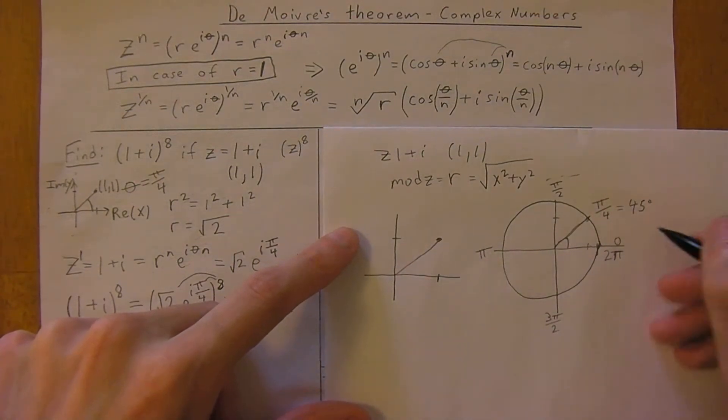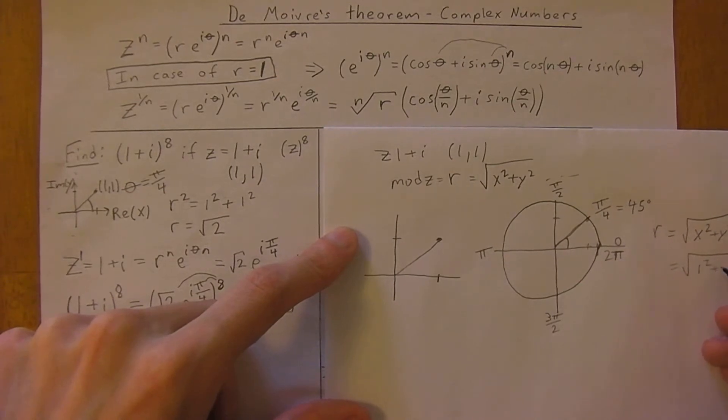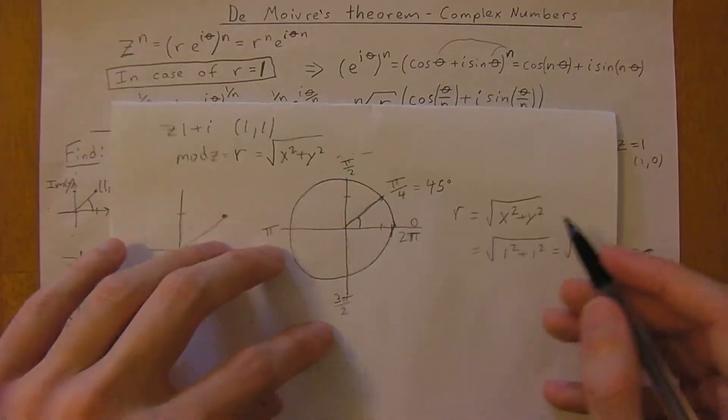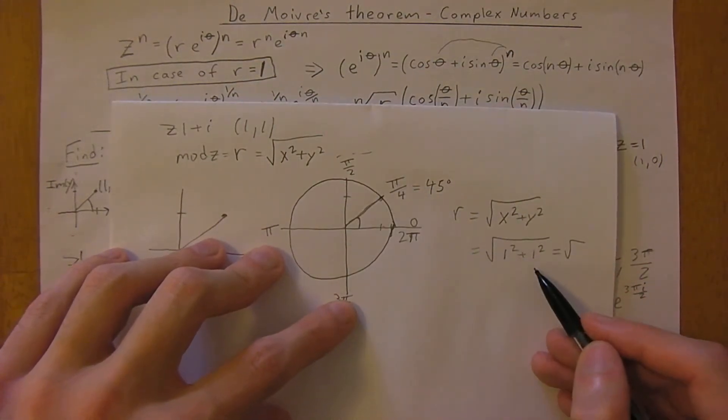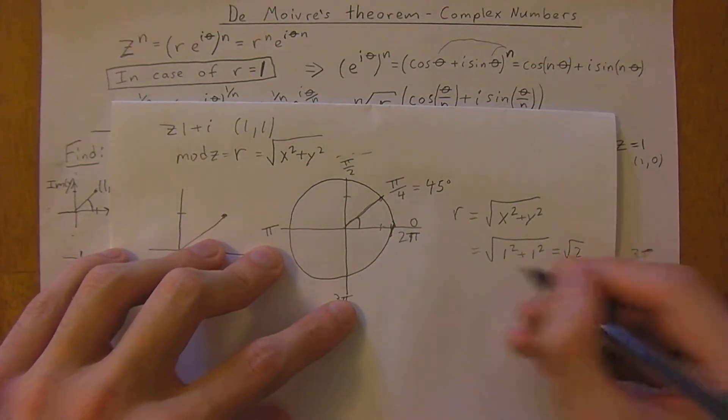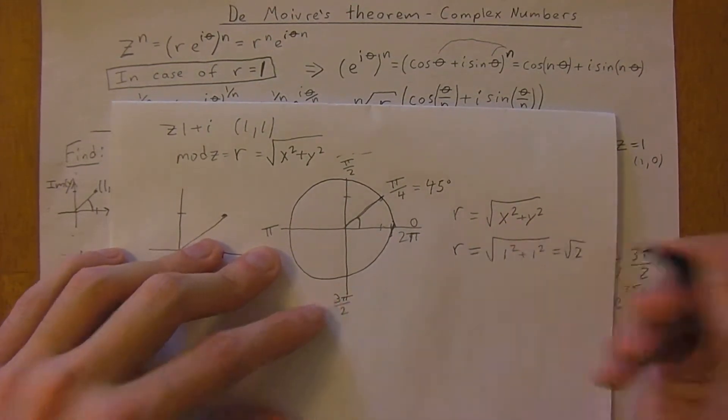The radius or modulus is going to be the square root of x squared plus y squared, which is just 1 squared plus 1 squared. So the square root of 2 is our modulus, or radius.